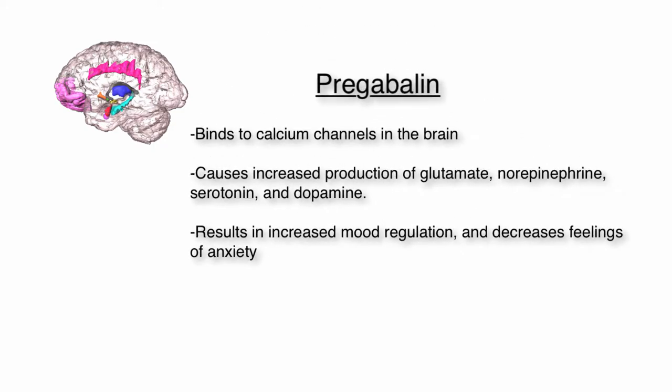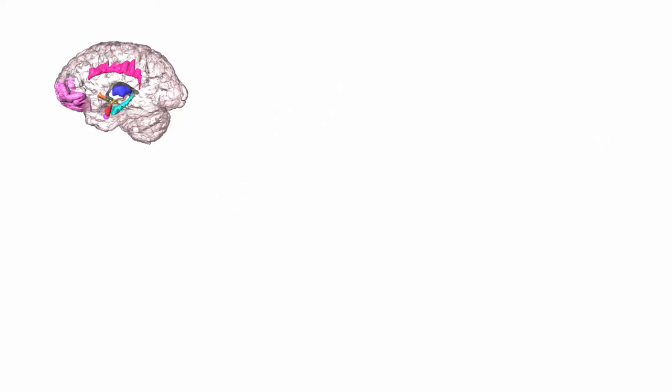Pregabalin is a drug that binds to the calcium channels found in the brain. After binding to the calcium channels, it stimulates increased production of glutamate, norepinephrine, serotonin, and dopamine, which are all stimulatory hormones. This results in increased mood regulation and decreases the feelings of anxiety.